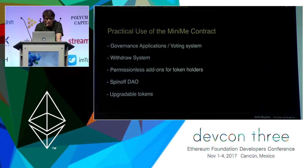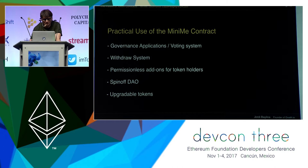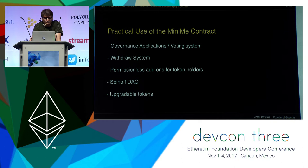Another interesting application is the distribution of rewards among token holders. When you want to distribute rewards on a regular basis, it's possible that you run into the problem that the distribution of the token may change as token holders trade the coin. MiniMe solves this problem because you know the balance of any token holder at any time in the past. So you can easily create a contract that distributes rewards according to the holdings that each token holder had at the moment each reward was issued.